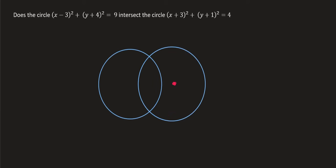Here we have two circles that have intersected. You would work out the distance between their two centers — let's say that answer was 20 again. The radius of the first circle is 12, and the radius of the second circle is 15. Together the two radii add up to 27, but the distance between the two centers is only 20. So the two circles would reach each other because the distance is 20, but the two radii together give 27 — they are long enough to connect the two circles.